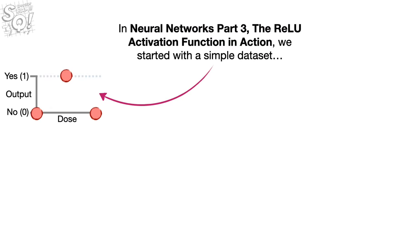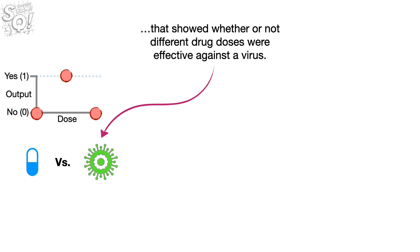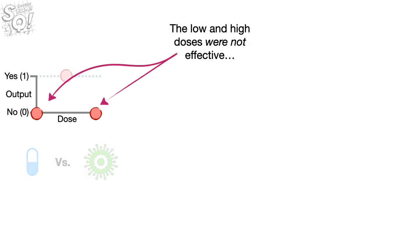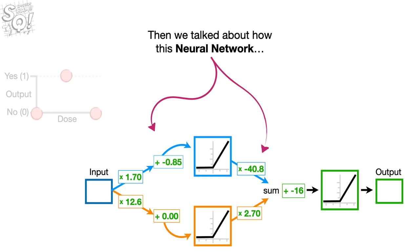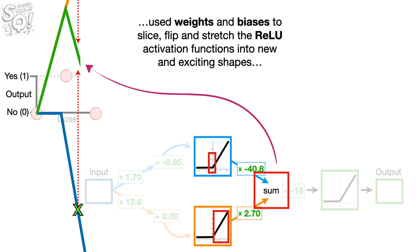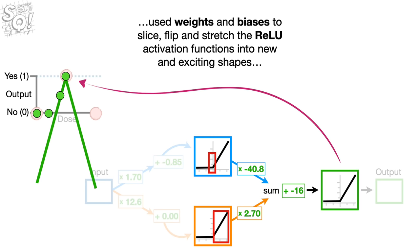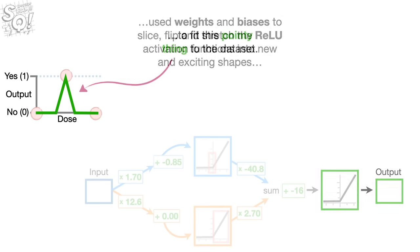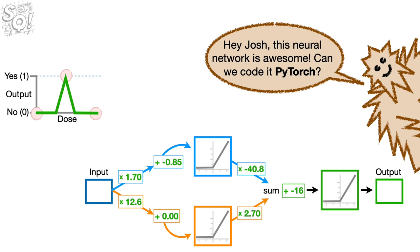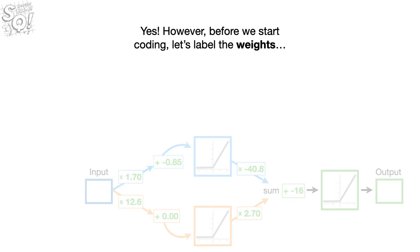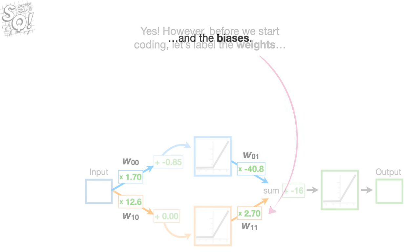In Neural Networks Part 3, the ReLU activation function in action, we started with a simple dataset showing whether different drug doses were effective against a virus. Then we talked about how this neural network used weights and biases to slice, flip, and stretch the ReLU activation functions into new shapes to fit a pointy curve to the dataset. Now, can we code it in PyTorch? Yes — but before we start coding, let's label the weights and biases.